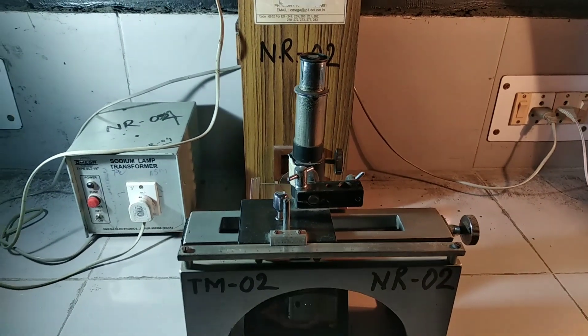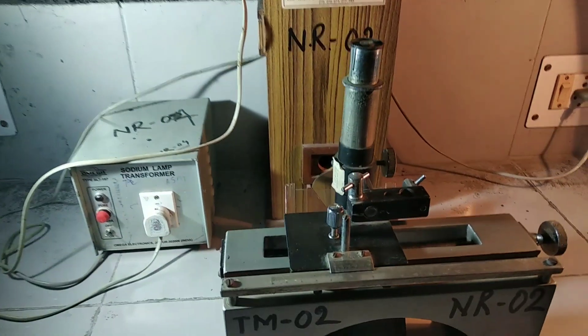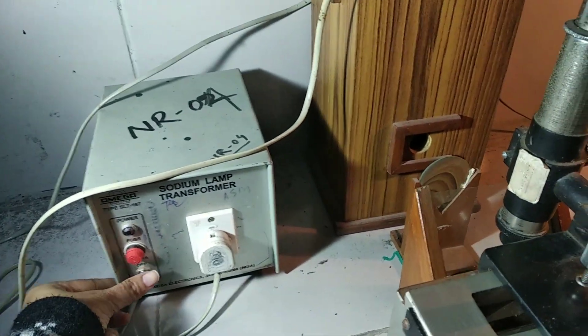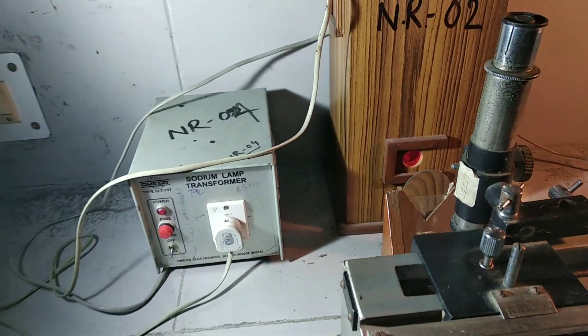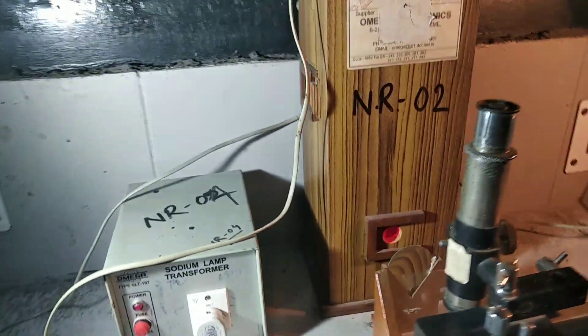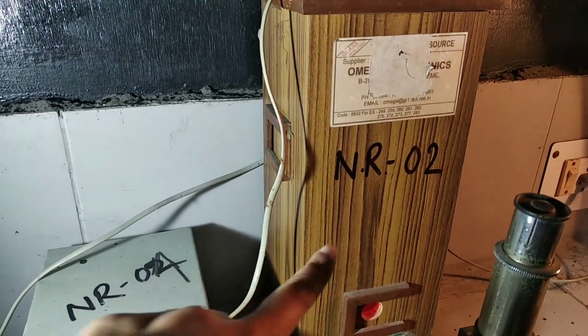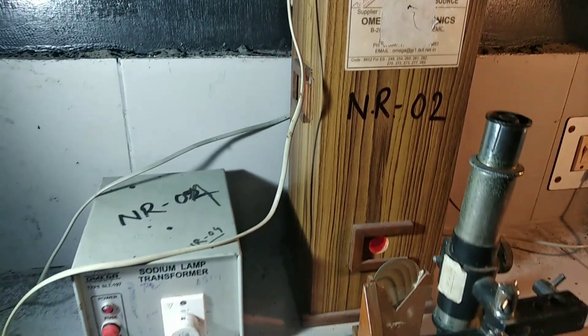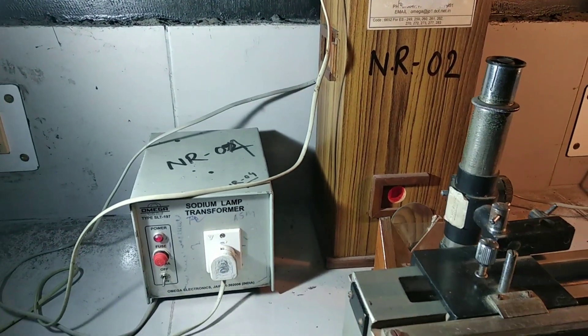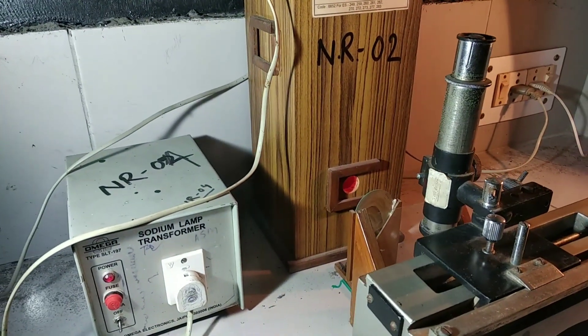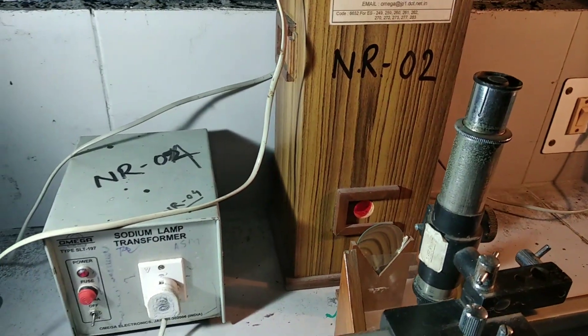This is the apparatus and we first need to switch on the transformer. This is sodium vapor lamp and we need to wait for 10 to 15 minutes to heat it up. It will be dark yellow after 10 to 15 minutes. So we need to turn this on and wait for 10 to 15 minutes.